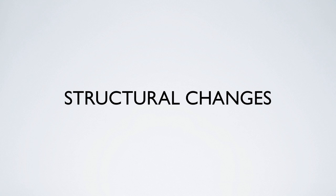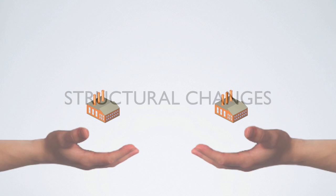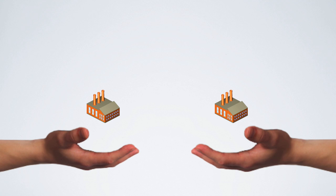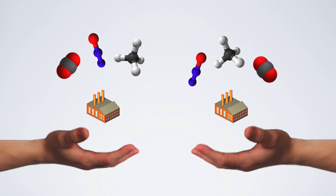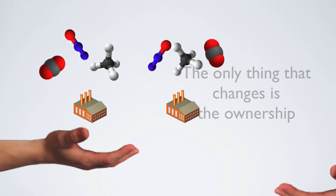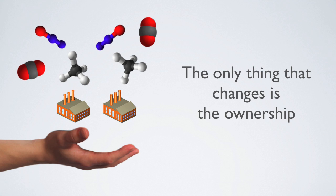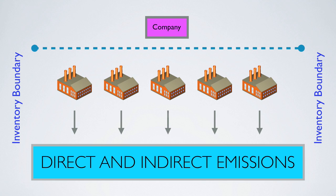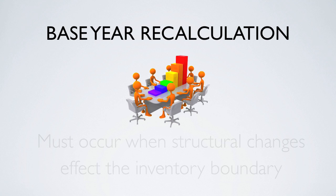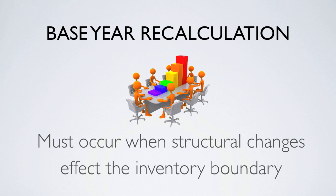Structural changes necessitate the recalculation of historical emissions because they don't actually change the amount of greenhouse gases emitted into the atmosphere — they just transfer emissions from one company to another. But in order to make meaningful comparisons between the base year and future years, the inventory boundary must be held consistent. Since this is not always the case, base year emissions must be recalculated when structural changes that affect the inventory boundary take place.